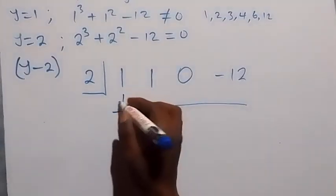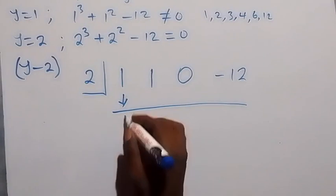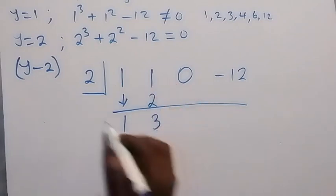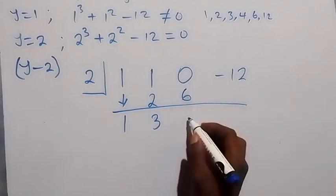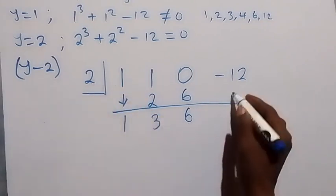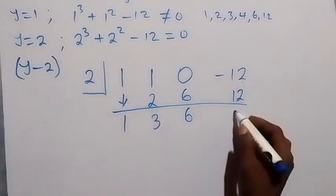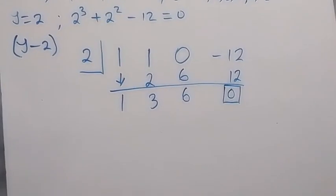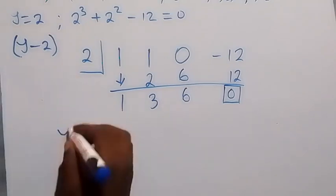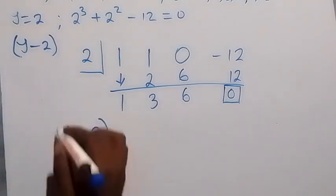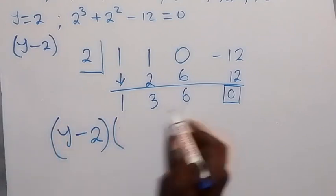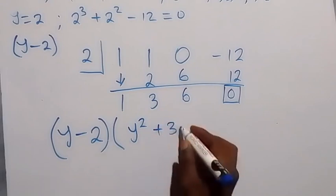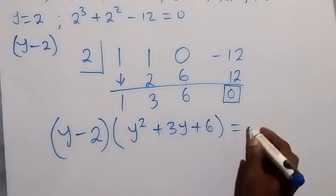Performing the synthetic division: drop the 1, then 2 times 1 is 2, giving 1 plus 2 equals 3. Then 2 times 3 is 6, giving 0 plus 6 equals 6. Then 2 times 6 is 12, confirming a remainder of 0 — so 2 is indeed a root. The other factor has coefficients 1, 3, and 6, giving y squared plus 3y plus 6.